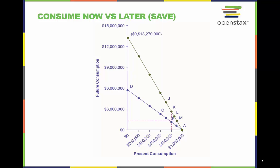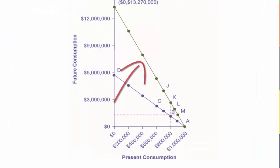When the annual rate of return, or the price of money, rises to 9 percent, the intertemporal budget constraint pivots up. John could choose to take the gains from his higher rate of return in several forms.